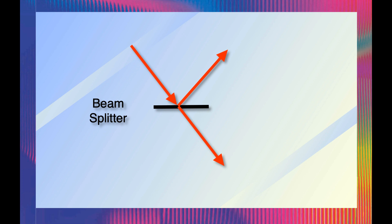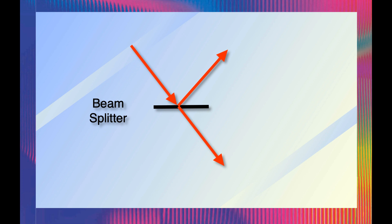In general, it's a beam combiner. Given two input fields, the output fields are superpositions of the inputs. For instance, if we have input fields E0 and E1, then there will be two output fields E2 and E3, which will be linear superpositions of the inputs.